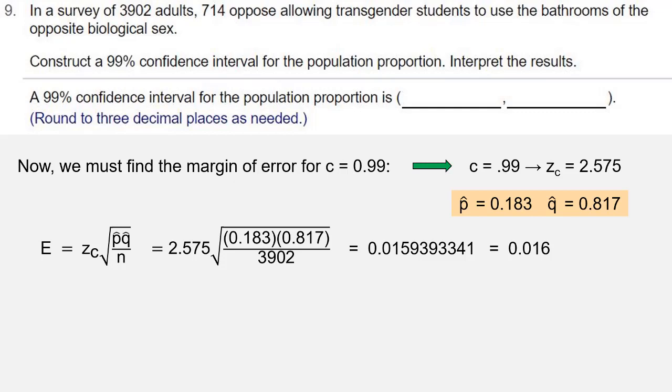Once we have the margin of error, we're going to subtract that from p-hat and add that to p-hat. So p-hat minus the error is 0.183 minus 0.016,